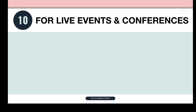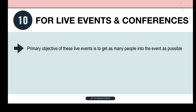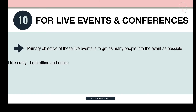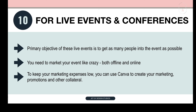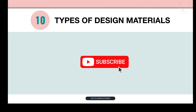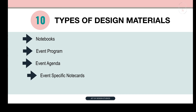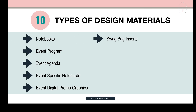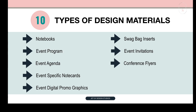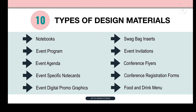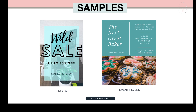Last one: use Canva to design materials for live events and conferences. If you've ever put on a live event, you already know it can get pretty expensive — there's the location, speakers, food, marketing materials, and more. The primary objective is to get as many people into the event as possible, and to do this you need to market your event like crazy, both offline and online. To keep your marketing expenses low, you can use Canva to create your marketing promotions and collaterals — everything from conference registration forms to flyers. You can also create: notebooks, event program, event agenda, event-specific note cards, event digital promo graphics, swag bag inserts, event invitations, conference flyers, conference registration forms, and food and drink menus. Here are some examples — flyers and an event flyer.